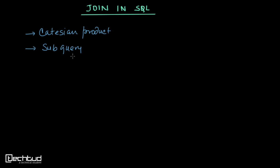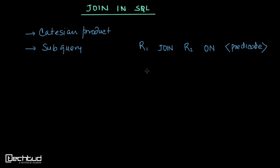Using JOIN we can join more than one table. The simple syntax is: let's say we have relation R1 and relation R2 and we want to join them — we write R1 JOIN R2 ON and then the condition, that is the predicate. It will join R1 and R2 over those conditions specified in the predicate.